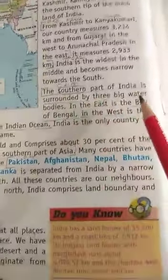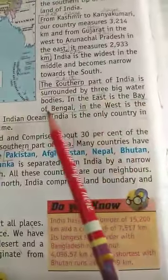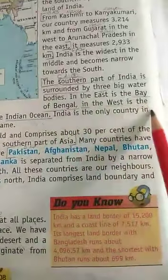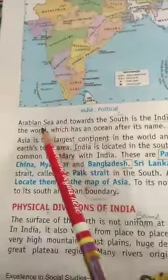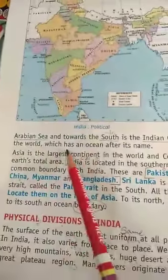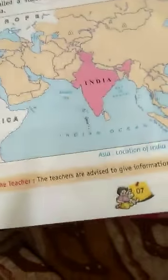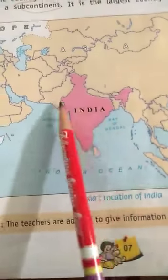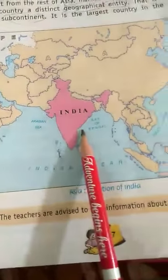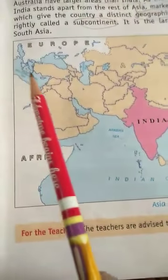The southern part of India is surrounded by three big water bodies: in the east, the Bay of Bengal; in the west, the Arabian Sea; and towards the south, the Indian Ocean. India is the only country which has an ocean after its name. See page number 7 — in blue, these are the water bodies: Arabian Sea, Indian Ocean, Bay of Bengal, Red Sea, Mediterranean Sea.